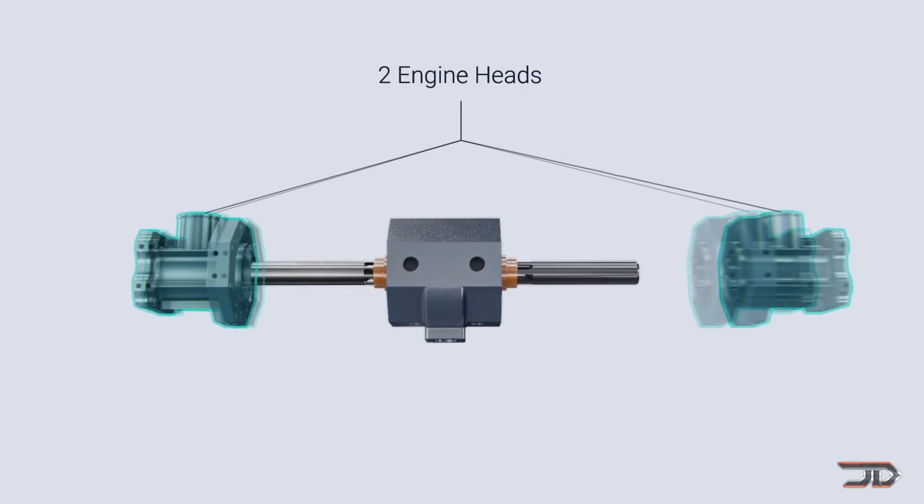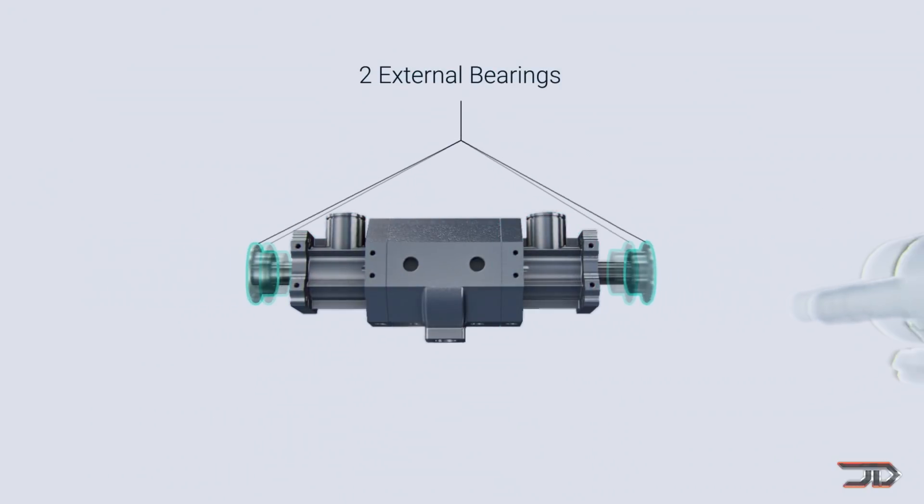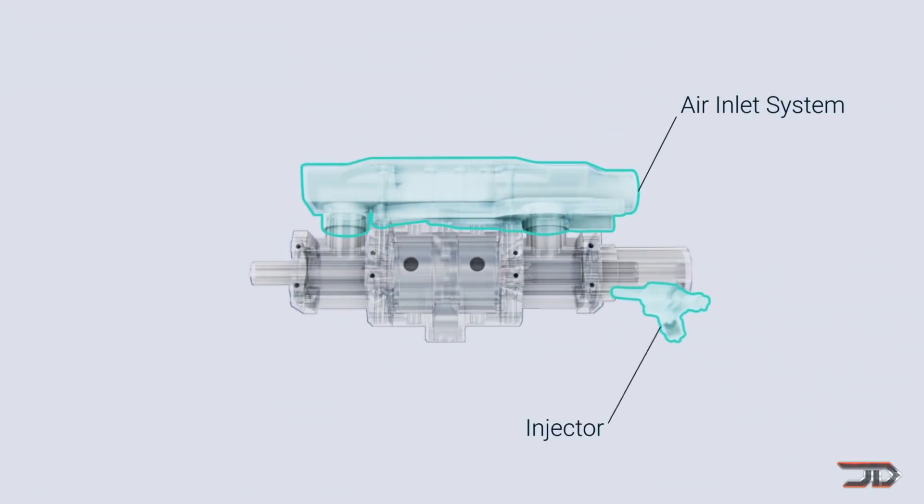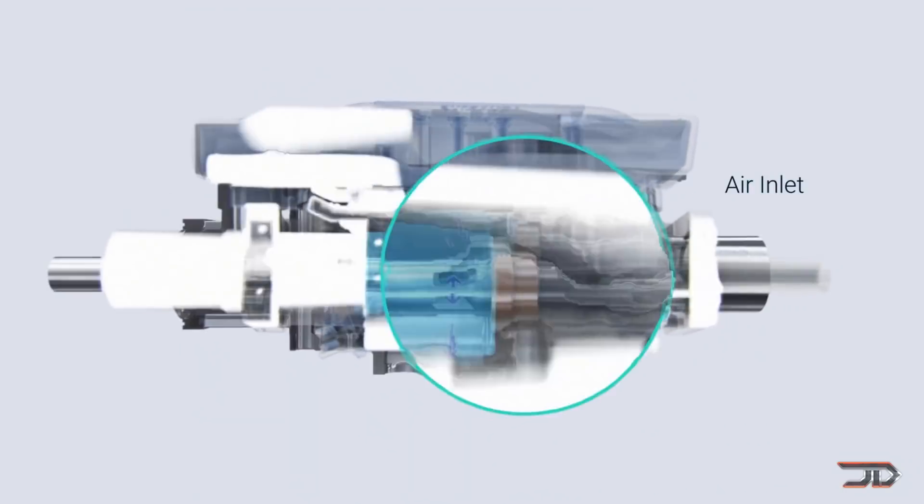It has one piston with combustion at two points in a valve of the cylinder. The end of the rod is connected to a magnet which moves inside coils, thus generating electricity. It's oil-free, and it only has one moving part.